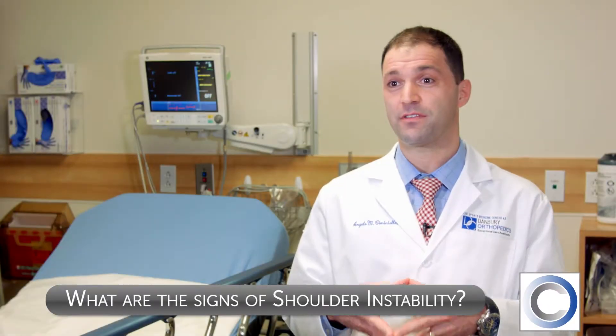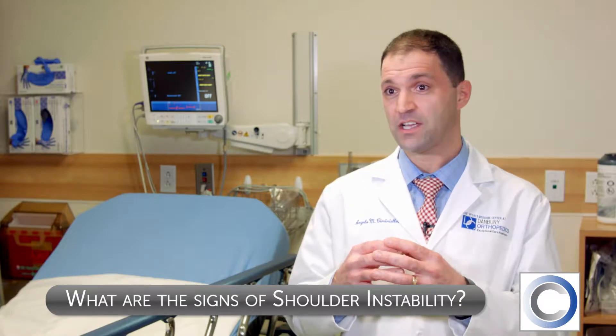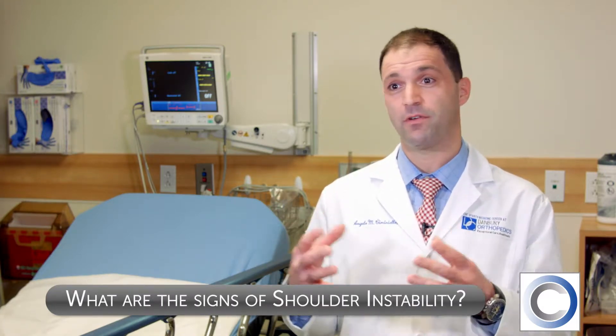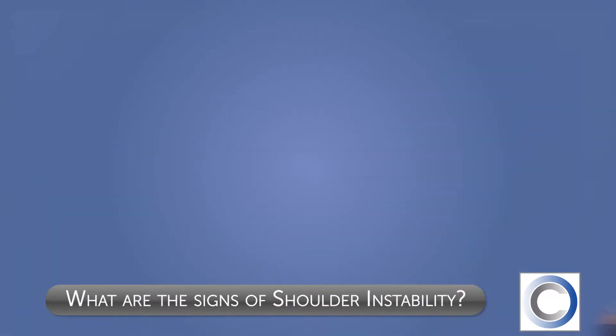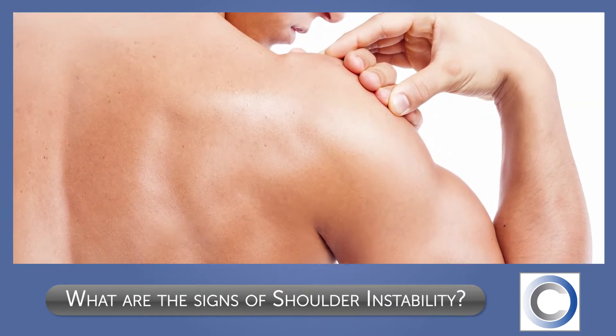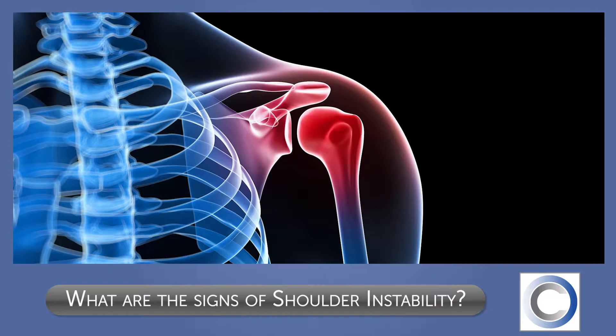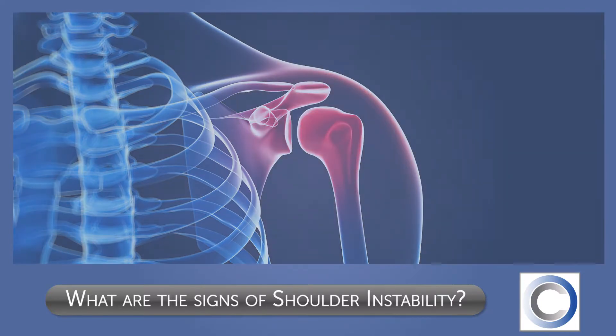Most patients who experience a shoulder dislocation will have immediate onset of pain and even some deformity to the level of the shoulder. This typically happens during sporting events, but in chronic cases this can happen with everyday activity. Most shoulder instability happens from a torn labrum in the shoulder and reduced amount of tension on the ligaments that connect to that labrum.